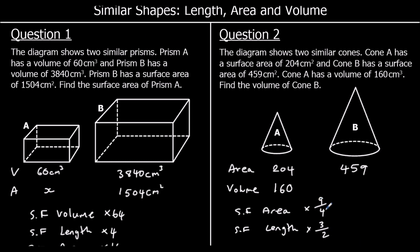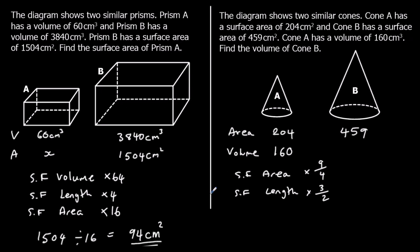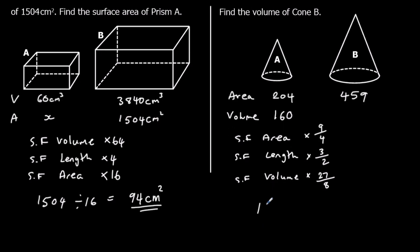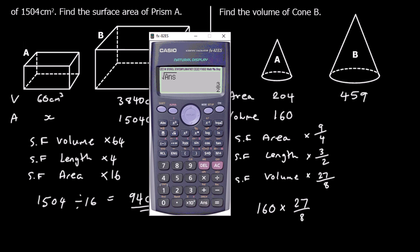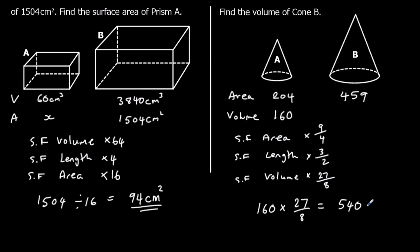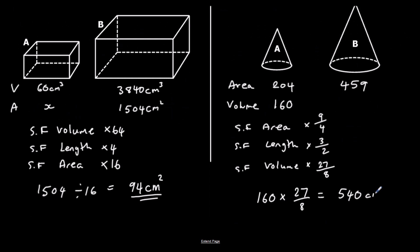Square root of 9 is 3, and square root of 4 is 2. We want volume, and the scale factor for volume is scale factor cubed, so (3/2)³. 3³ = 27 and 2³ = 8, so the scale factor for volume is 27/8. We're going from the small shape to the big shape, so we multiply: 160 × 27/8 = 540 cm³.